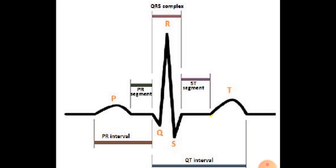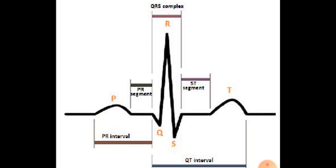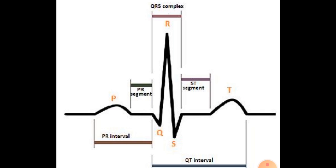Now you can see the T wave at the end. The T wave represents the return of the ventricles from the excited state to the normal stage. First the auricles contracted, then the ventricles contracted, and now the ventricles return to their normal state — we call this repolarization. The end of the T wave marks the end of the systole, meaning ventricular systole is now over.